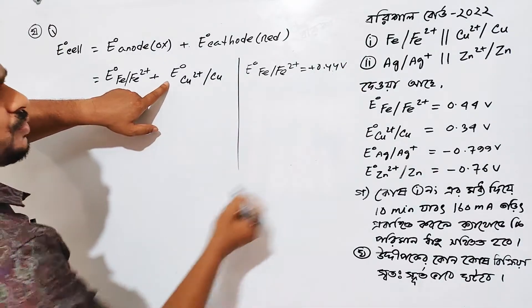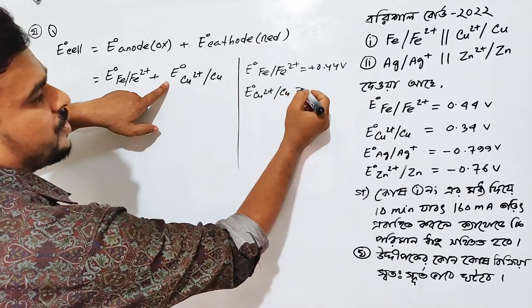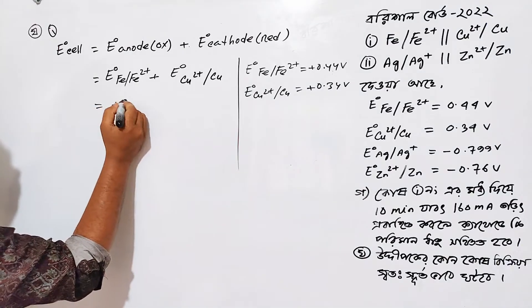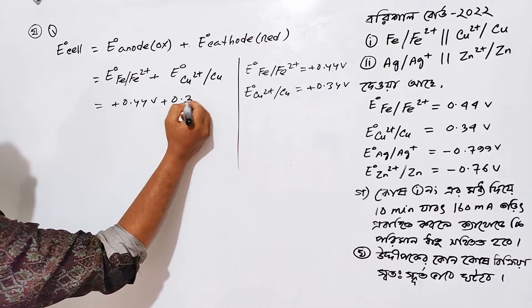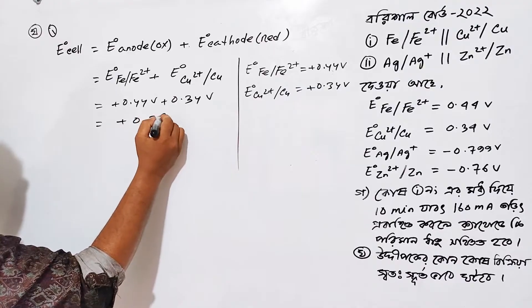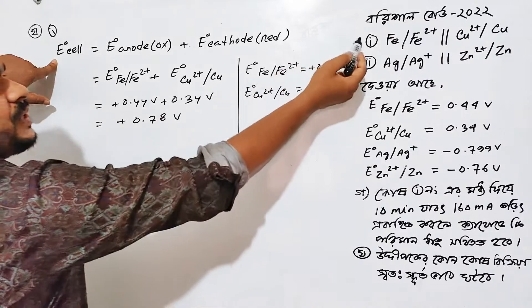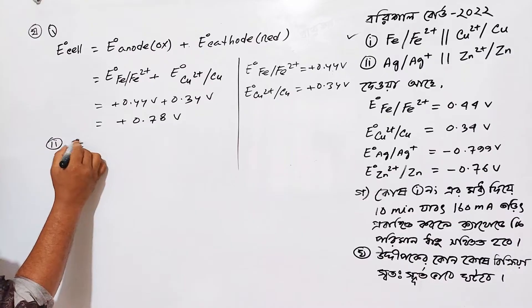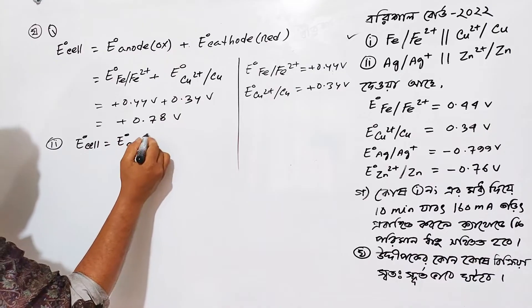2 plus of leak, plus 0.34 volt. If we draw a dot — plus 0.44 volt plus 0.34 volt. This is not a question.